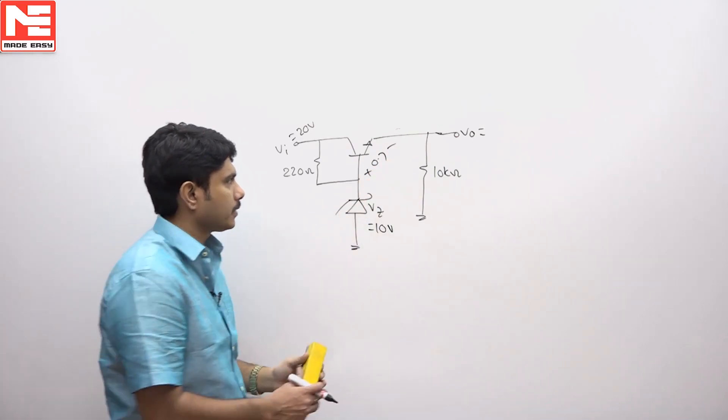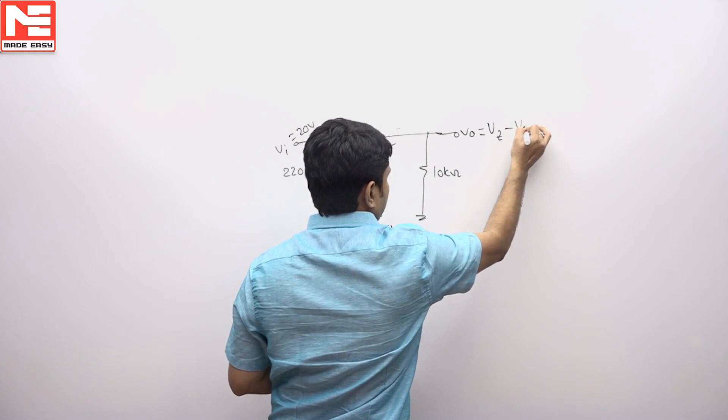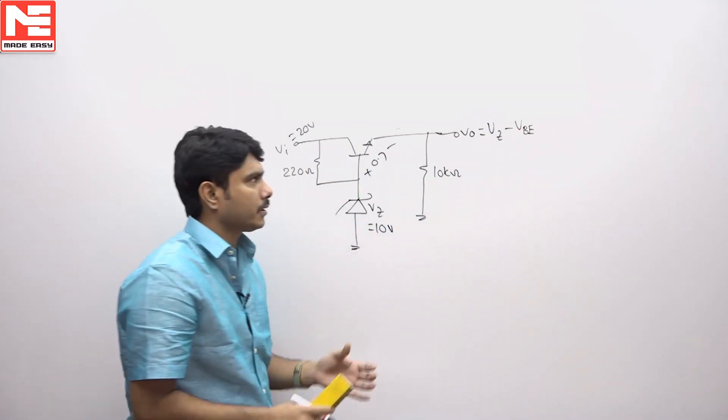So what will be the output voltage is Vz minus Vb. This must be the constant voltage coming from the regulators.